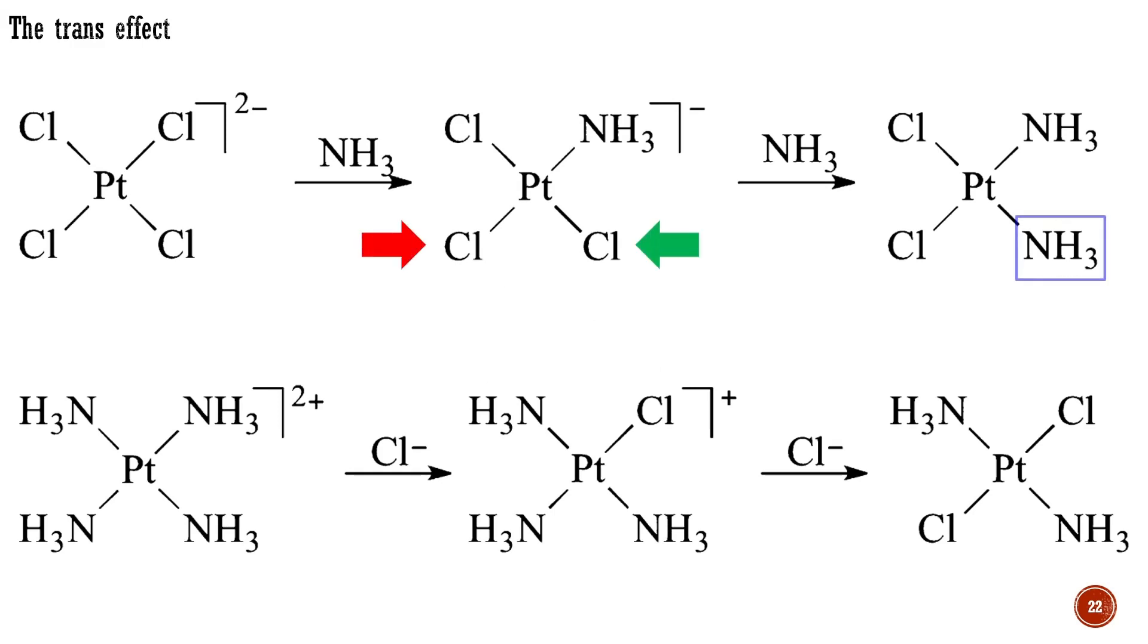For example, in the second step of the first equation, the ammonia does not replace the chloride trans to ammonia, but only the chloride trans to chloride. This observation means that chloride is a higher trans effect ligand than ammonia. In the second equation, once again, the ammonia trans to chloride is displaced, not the one trans to ammonia, which leads to the formation of the opposite isomer of cisplatin.